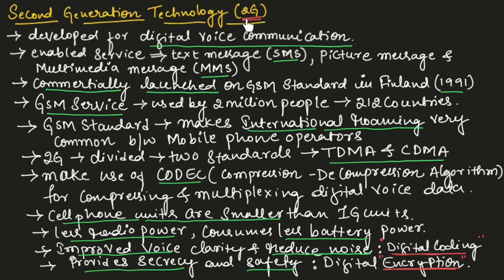2G stands for second generation cellular wireless communication system. Second generation was developed for digital voice communication. In the previous lecture, we understood about 1G, which is first generation, which was using analog voice communication. In case of 2G, it uses digital voice communication.